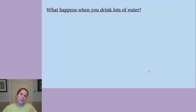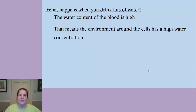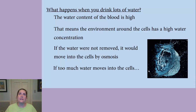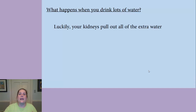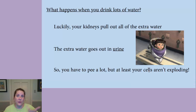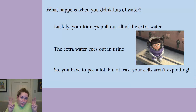What happens if you drink lots of water? If the water content of the blood is high, the environment around the cells has a high water concentration. If that water is not removed, it's going to go into the cells via osmosis, and if too much water enters the cells, they'll explode. Luckily, we have kidneys — our kidneys pull out all the extra water, it goes out in our urine, and that means you have to pee a lot, but at least your cells aren't exploding. This is what happened in the 'Hold Your Wee for a Wii' contest — the woman's kidneys couldn't keep up with all the water she was drinking, causing water poisoning.